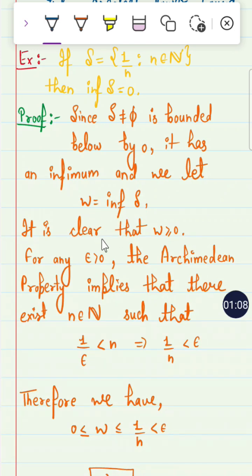And now, how do you show that it is an infimum? By Archimedean property, it implies that there exists N in natural numbers such that 1/ε < N. By Archimedean property this holds. So 1/N is less than 2ε.